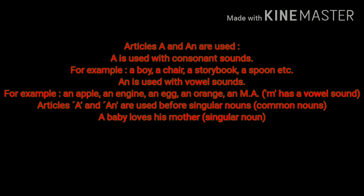Now, the usage of 'a' and 'an': 'A' is used with consonant sounds — for example: a boy, a chair, a storybook, a spoon, etc. 'An' is used with vowel sounds — for example: an apple, an engine, an egg, an orange, an umbrella. Note: 'M' is a consonant letter but produces a vowel sound, so 'an' is used before it. Articles 'a' and 'an' are used before singular nouns — for example: 'A baby loves his mother.'